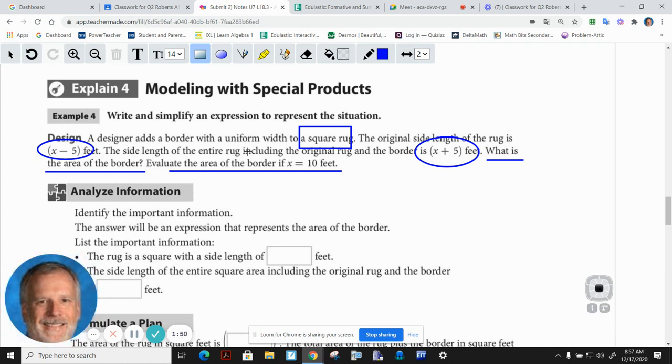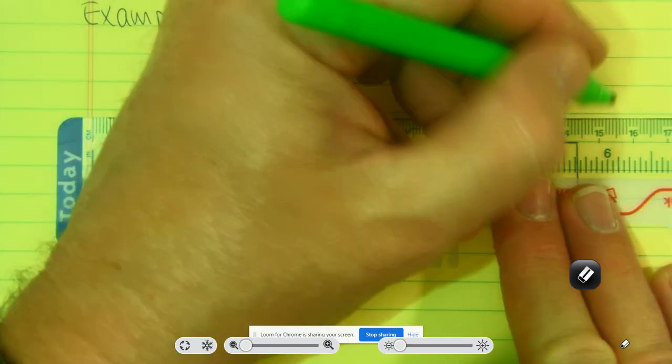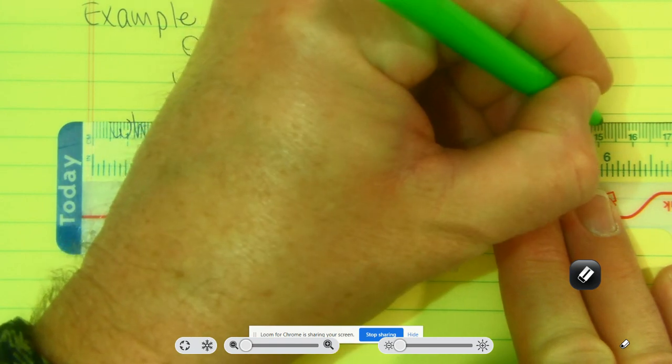Then it says the side length of the entire rug, including the original rug and the border. So here's what's happened: this rug has gotten bigger by a border that goes all the way around all four sides. Now this side length of this new rug with the border is x plus 5, so x plus 5 is bigger. In other words, I'll be finding the area of a bigger rug. So what we want to know then is what is the area of the border, and then evaluate the area of the border if x is 10 feet. The rug basically is going to have this border around it - in other words, a bigger rug.